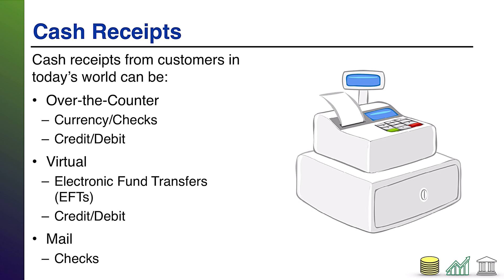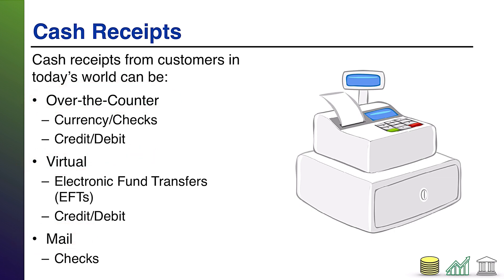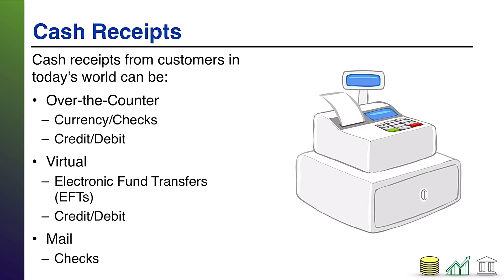When we say cash receipts, you might literally think of someone handing cash to another person, or in the case of a business, a customer handing cash to a business they are purchasing something from. But in today's world, the term cash receipt really isn't that simple anymore, because there are numerous ways to pay for something beyond simply handing someone physical currency. What I've done here is divided the method by the interaction medium. The three methods are: over-the-counter, where the customer and company are face-to-face; a virtual environment, where the customer is purchasing online; or by mail, where payment occurs through, say, the U.S. post office.